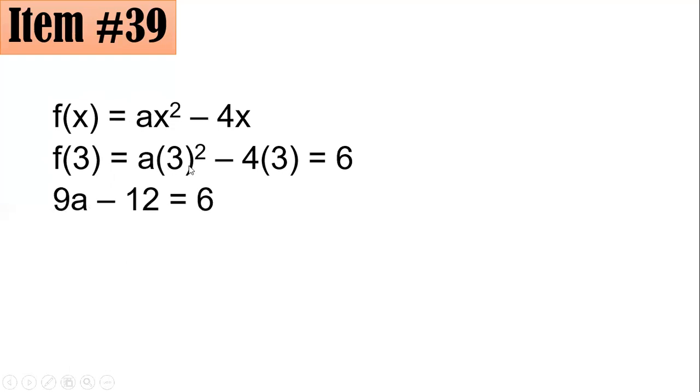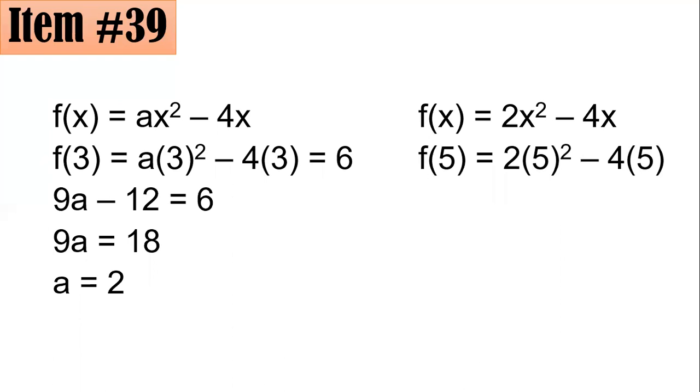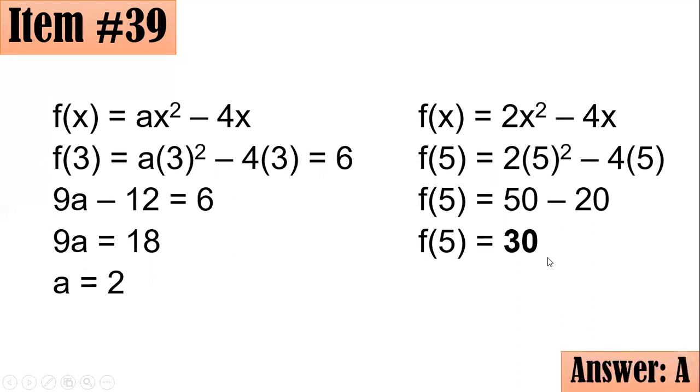Adding 12 to both sides gives 9A equals 18. Dividing both sides by 9 gives A equals 2. So now we know the value of A, which is 2. We have to substitute it back here. Therefore, your function is f of x equals 2x squared minus 4x. And we're looking for the value of f of 5. So f of 5 equals 2 times 5 squared minus 4 times 5. That becomes 50 because 2 times 25 here is 50 minus 20, which is 30. Letter A. Good job. I hope you got it.